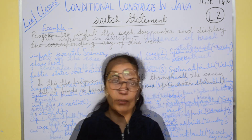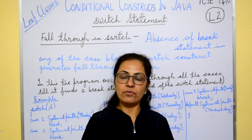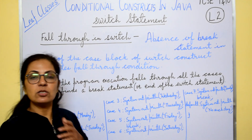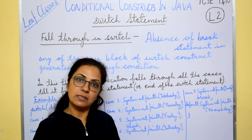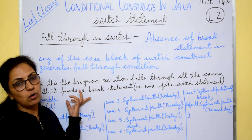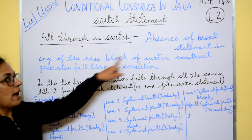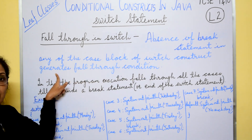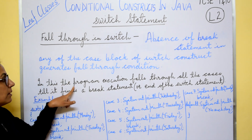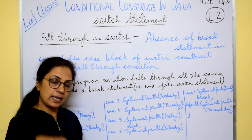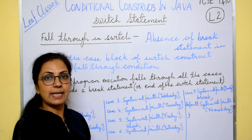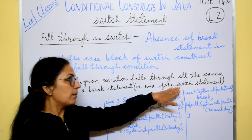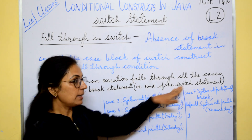Fall through in switch construct: the absence of a break statement in any of the case blocks generates the fall through condition. Absence of break statement in any case block of the switch construct generates fall through condition. In this, program execution falls through all the cases — it goes into the next case, then the next, until it finds a break statement or the end of the switch statement occurs.